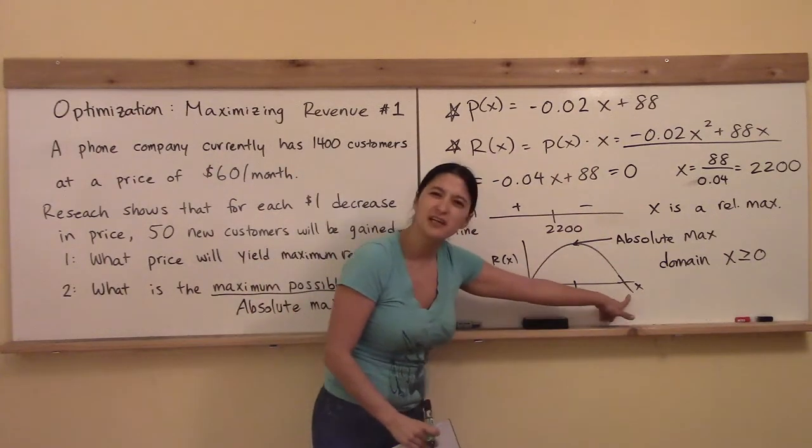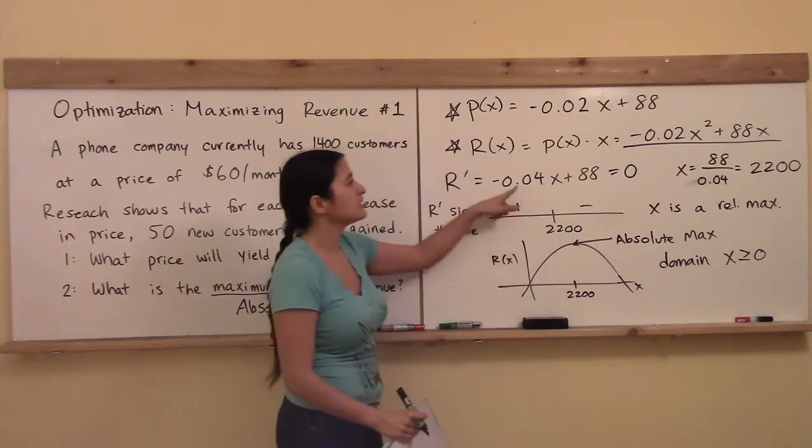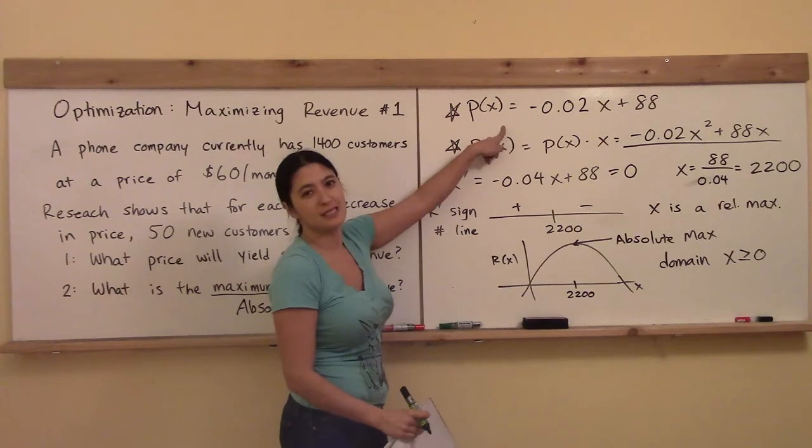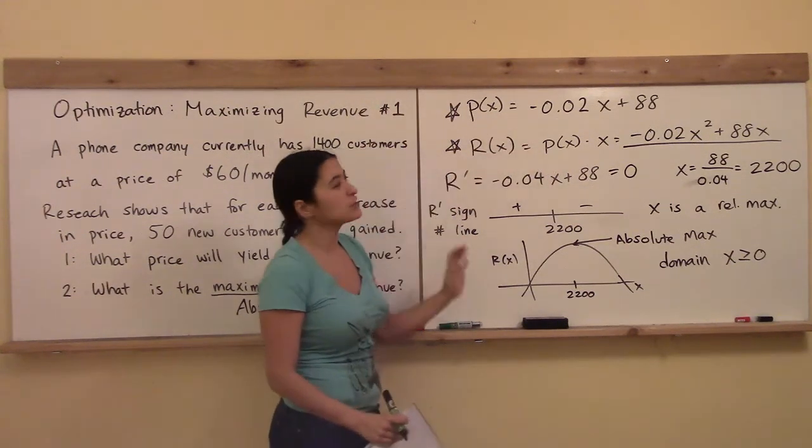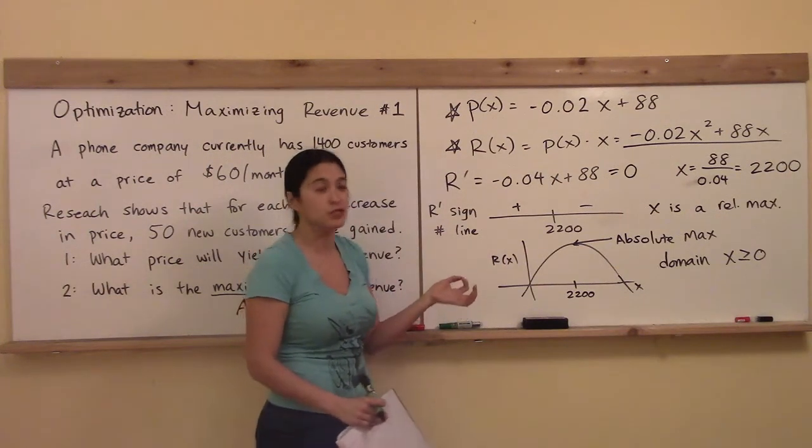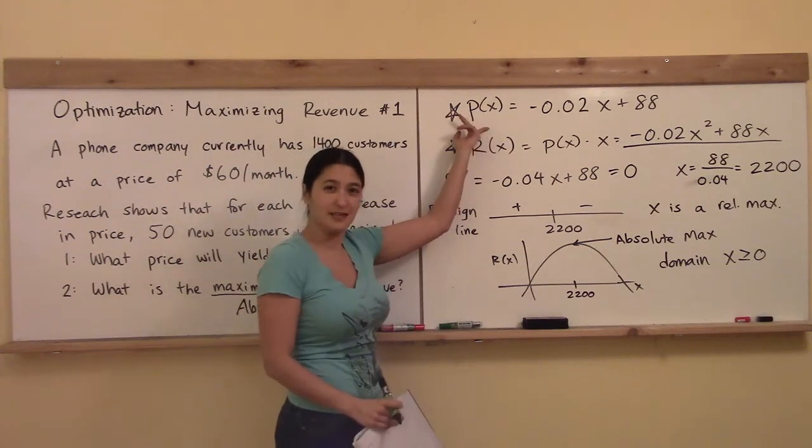Why is it negative here? Because with this pricing scheme, you can see this is a down-facing line, like this is a line that's sloping down, so eventually if I have too many customers, I will be offering it at a negative price.